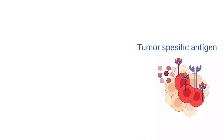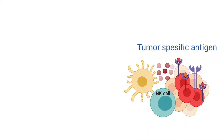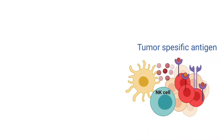The transformed cells of tumors express antigens that are not found on normal cells — what we call tumor-specific antigens. To the immune system, these antigens appear foreign, and their presence causes immune cells to attack the transformed tumor cells.